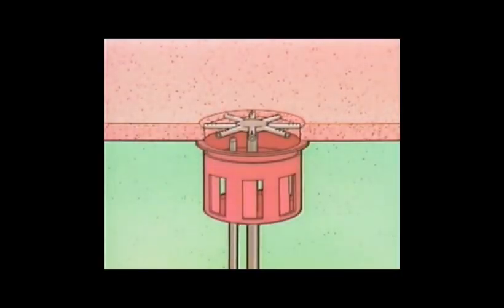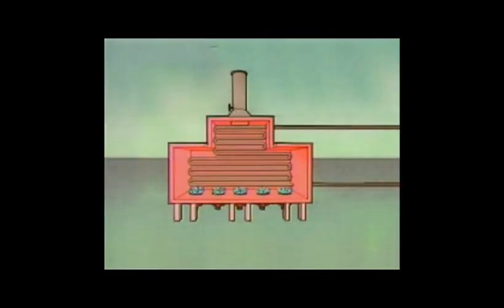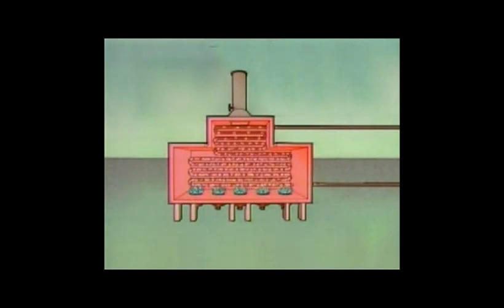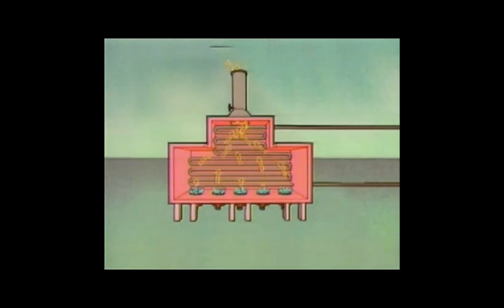All parts and systems associated with the furnace accomplish one basic task: heating a process fluid. Furnace operation can be broken down into three basic actions. First, air and fuel are introduced into the furnace, mixed by the burners, and ignited — as the fuel burns, a chemical reaction produces heat. Second, the heat is transferred to the process fluid flowing through the tubes by conduction, convection, and radiation. Third, the combustion gases produced by burning fuel rise through the stack and are exhausted to the atmosphere.